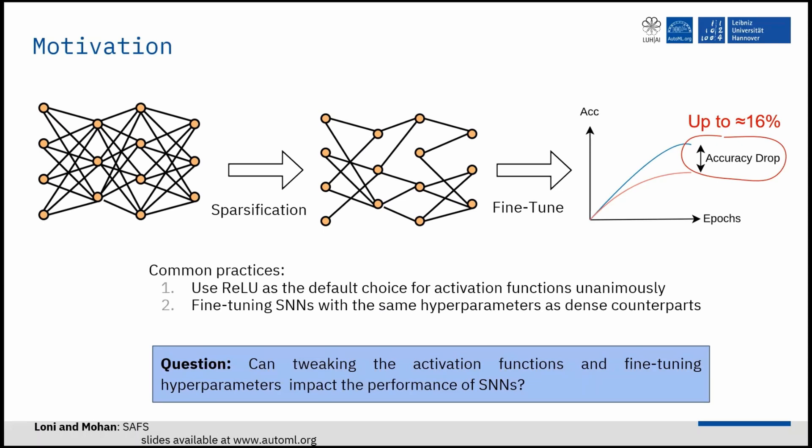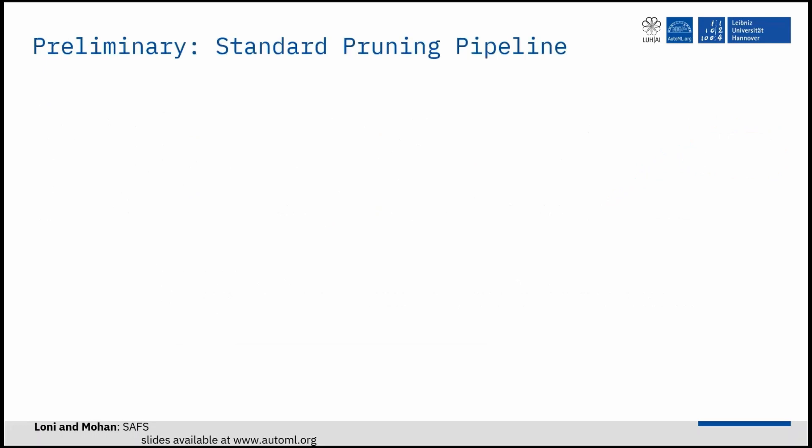A natural step is to ask, can tweaking the activation functions and fine-tuning hyperparameters improve the performance of sparse neural networks.